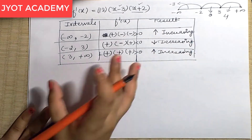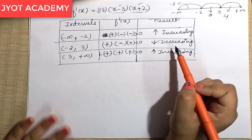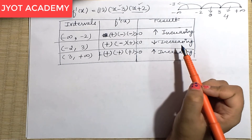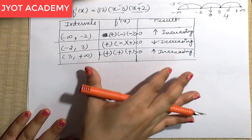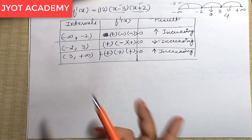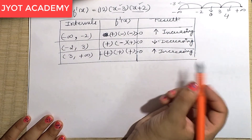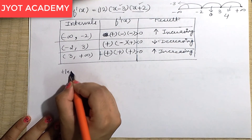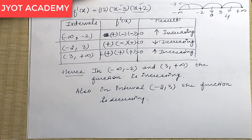For the interval (3, +∞), I choose x = 4. Then (x - 3) = 4 - 3 = 1, positive, and (x + 2) = 4 + 2 = 6, positive. So all factors are positive — f'(x) > 0. Therefore f is increasing on (3, +∞). Hence f is increasing on (-∞, -2) and (3, +∞), and decreasing on (-2, 3). I hope this is clear.